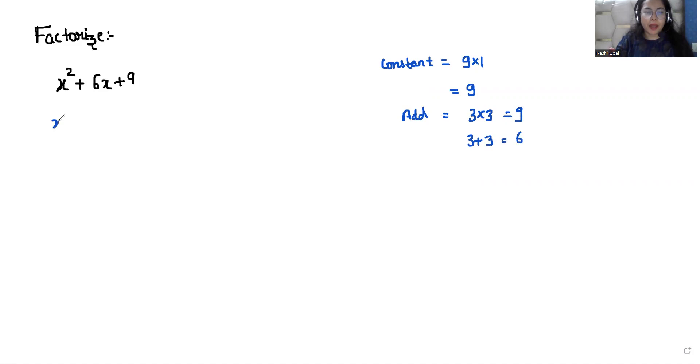So I can write the middle term as 3x plus 3x plus 9. From the first two terms I can take x as common, so x plus 3 is left.